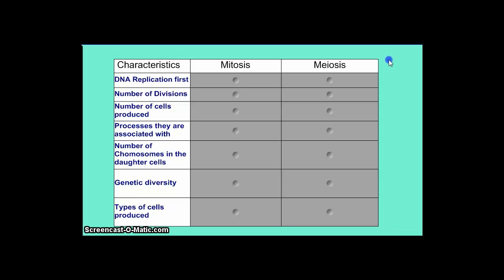In your notes you should have a table with an extra section called the explanation section. I'm going to uncover the differences and then explain why those differences are important, why they're significant, and why they occur. I'm going to ask you to fill in the mitosis and meiosis columns, and also explain why each difference is true or important. Let's begin — the first characteristic: DNA replication occurs first in both processes.